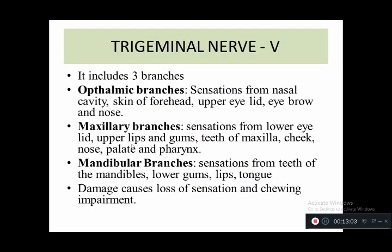The fifth cranial nerve is the trigeminal nerve. It has three branches: ophthalmic, maxillary, and mandibular. The ophthalmic branch covers sensation from the eyeball, nasal cavity, skin of forehead, and upper eyelid. The maxillary branch covers the upper gums, teeth of the maxilla, cheek, nose, palate, and pharynx. The mandibular branch is responsible for sensation from the teeth of the mandible, lower gums, lips, and tongue. Damage causes loss of sensation and impaired chewing function.